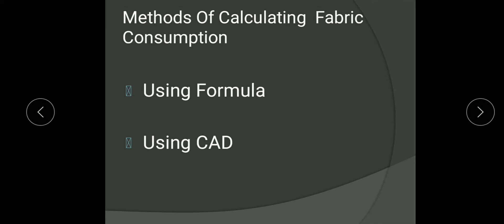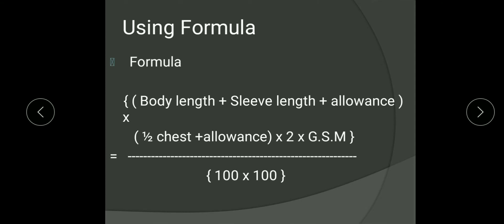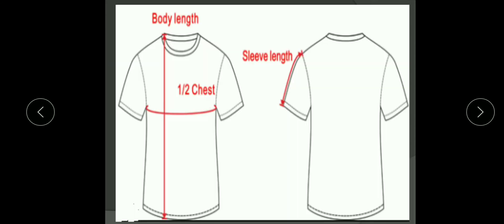Let us discuss them one by one. First we will discuss about the formula method. The formula is: body length plus sleeve length plus allowance, into half chest plus allowance, into 2, into GSM, divided by 100 into 100. Before explaining the formula, let me explain the terms inside it.